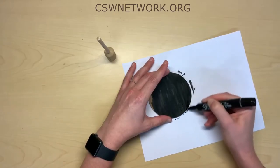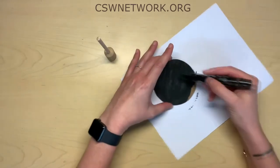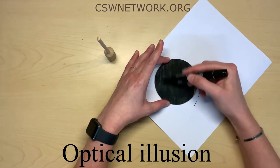When we experience a distortion of our vision and see something that is different from reality, that is called an optical illusion.